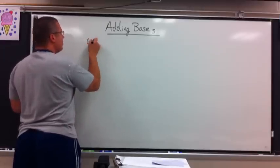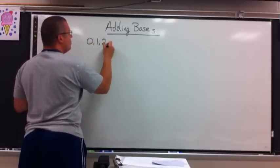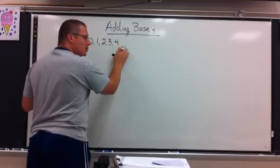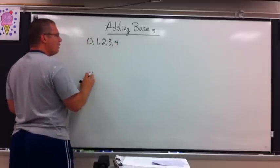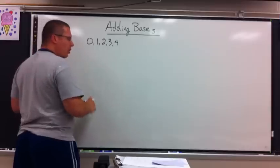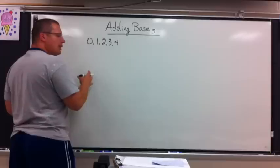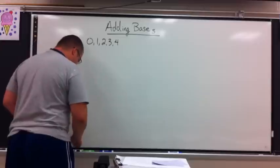The digits I'm allowed to use are 0, 1, 2, 3, and 4, which gives me a total of 5. I'm not allowed to use 5 or anything higher. And of course the place values we're aware of: 1, 5, 25, 125. I don't need to list those now. This is the more important part of it.